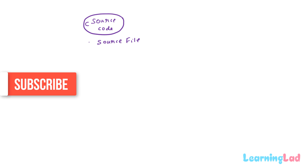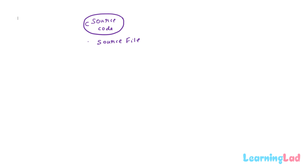If the file contains source code written in the C programming language, it is also called a C source file. We write the C program using a text editor and then save it in the computer memory as a computer file. You can use any text editor available to write the C program and save it as a computer file.